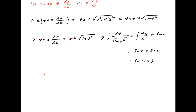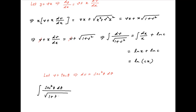Now to evaluate the integral on the left hand side, let v = tan(θ). Therefore dv = sec²(θ) dθ. The left hand side becomes ∫ sec²(θ) dθ / √(1 + tan²(θ)). Since 1 + tan²(θ) = sec²(θ), this integral equals ∫ sec(θ) dθ = ln|sec(θ) + tan(θ)|.